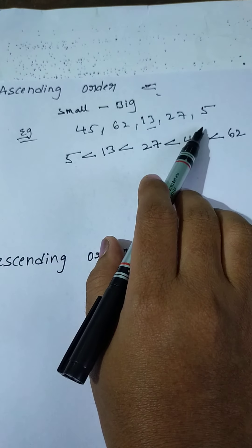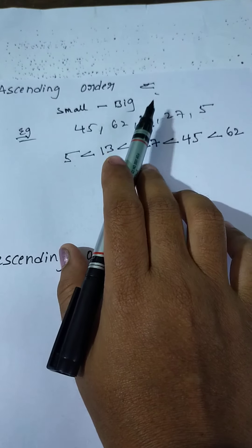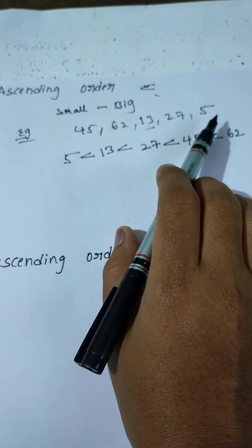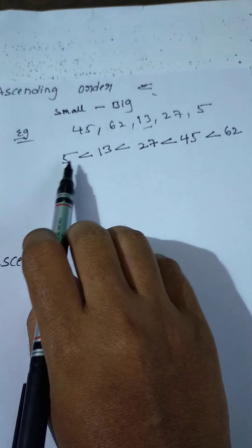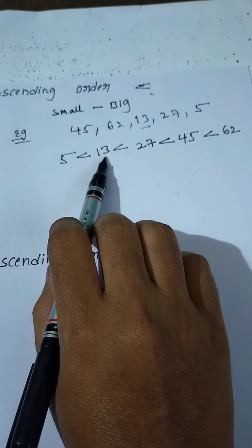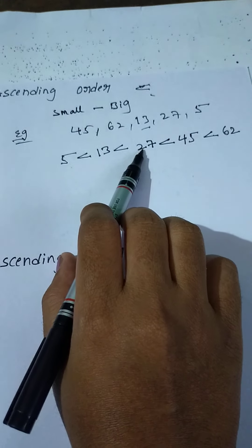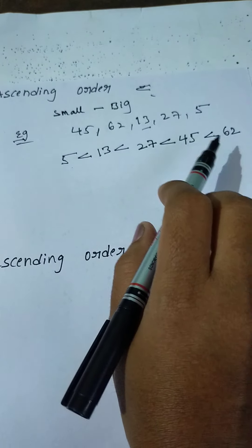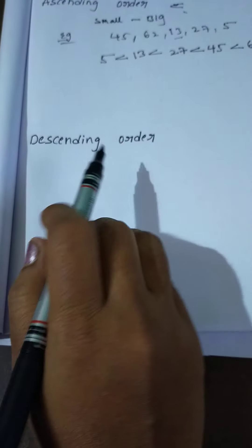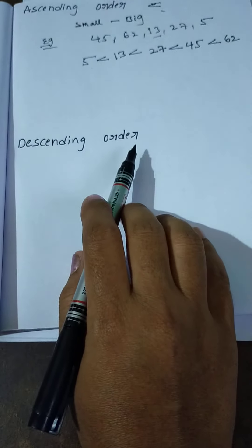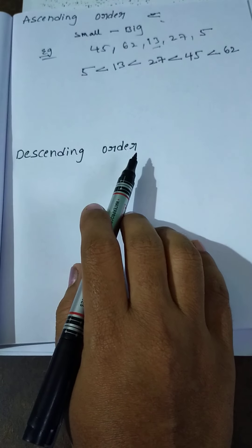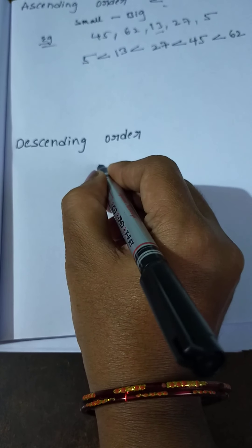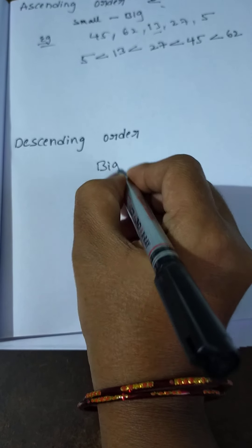Are you completed the 5 numbers? Yes: 1, 2, 3, 4, 5 — five numbers are completed. Ascending order means smallest to biggest. Arrange these numbers in smallest to biggest order using less than. So: 5 less than 13 less than 27 less than 45 less than 62. It is the ascending order.